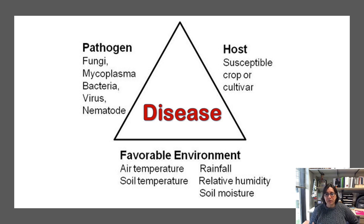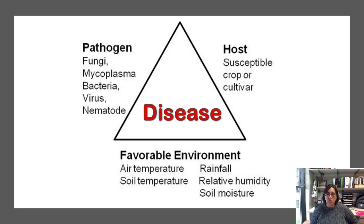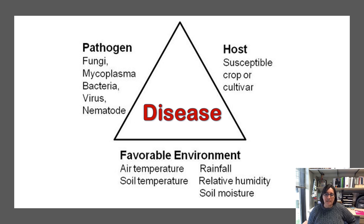The disease triangle is a concept we use in plant pathology to describe what constitutes a disease. Just like a triangle needs three sides, if you break one side you no longer have a triangle. If we use that same concept for disease: if we break one side of the disease triangle, we no longer have disease. So if we're going to think about managing disease, we think about which sides of the triangle we can break.